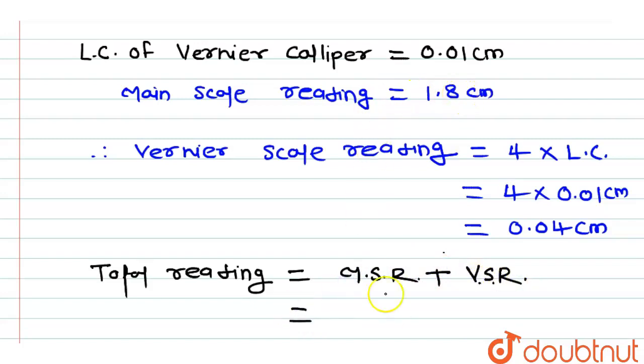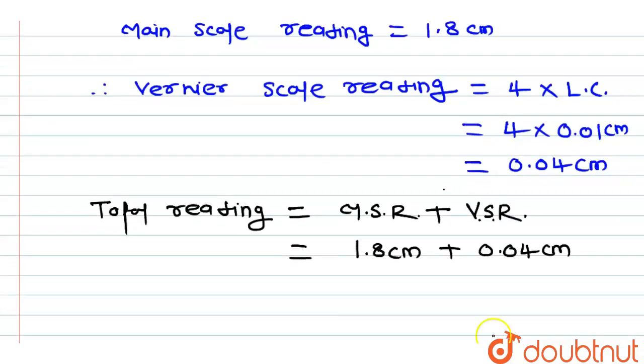So here, the main scale reading is 1.8 centimeter and the Vernier scale reading is 0.04 centimeter. Therefore, total length will be equal to 1.84 centimeter.